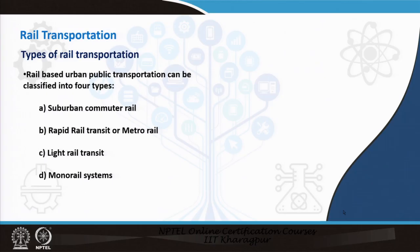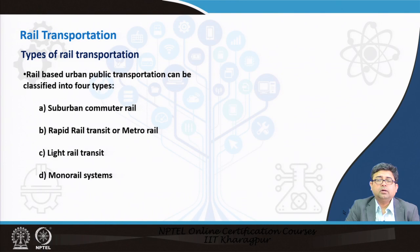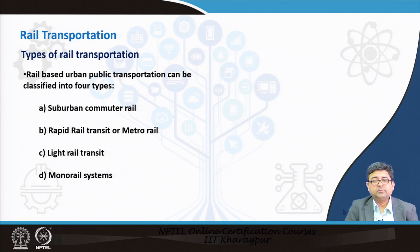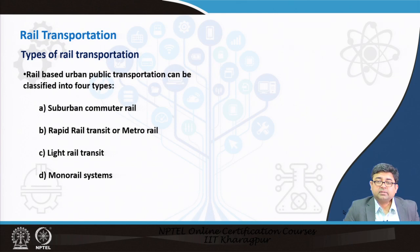In India, when we talk about urban rail transport we are usually talking about either suburban commuter rails, available in some of the large metropolitan cities, or rapid rail transit — otherwise called metro rail. We are also talking about light rail transit; not many cities have it, but we are now planning for light rail transit in some cities, and also monorail systems, which exist in only one city in India.